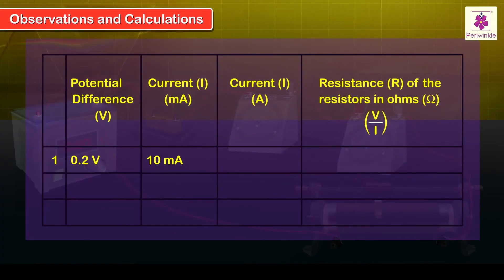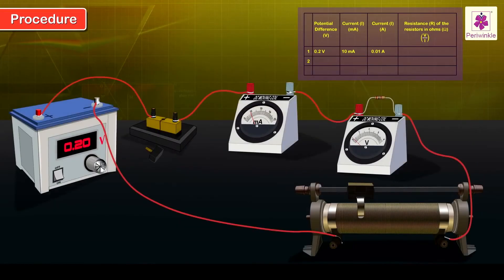Observations and Calculations. For potential difference 0.2V, a current of 10mA, i.e. 0.01A, flows through the circuit. Step 6: Reset the regulator of DC power supply to a slightly higher PD, say 0.4V, and repeat steps 4 and 5.